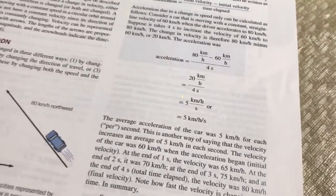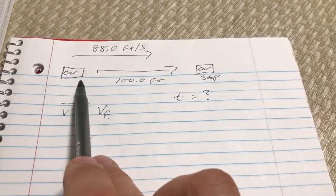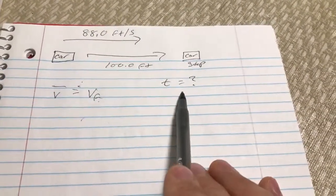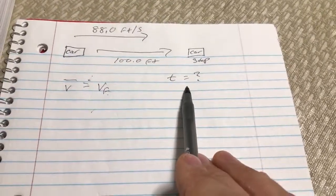So I'm trying to figure out one of the questions that it has on here. And the question is, if a car is driving at 88 feet per second, slams on the brakes, takes a hundred feet for it to come to a complete stop, how much time does it take?